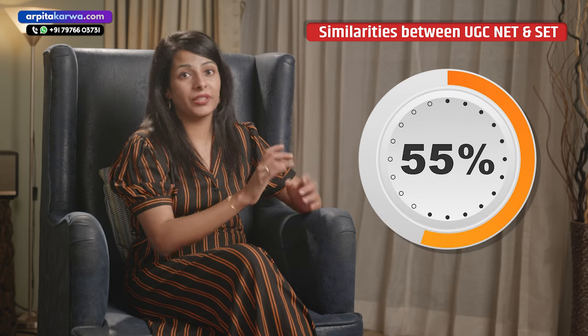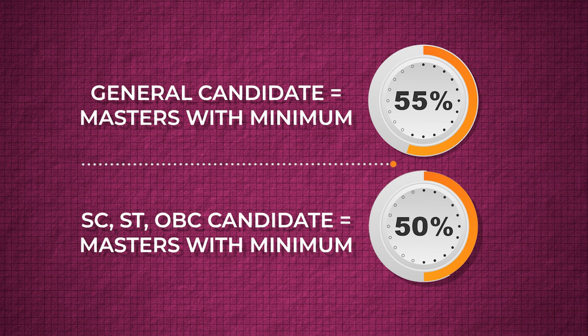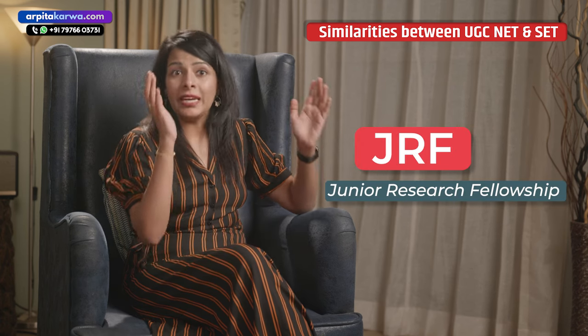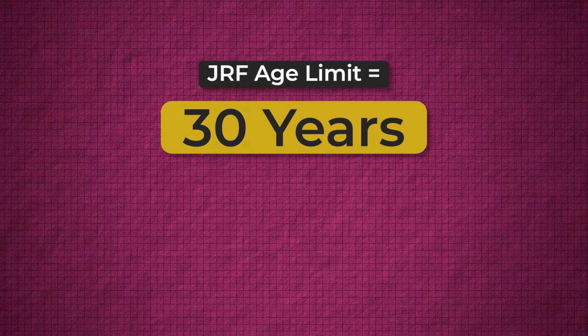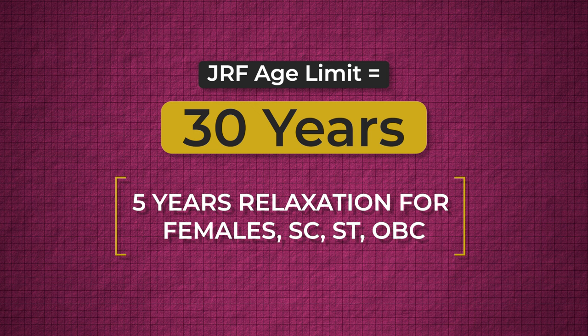The eligibility criteria is also the same for both NET and SET. In both, you need a minimum of 55% marks in your master's without rounding off — this is for general candidates. It is 50% in the case of ST, SC, OBC, and PWD candidates. You can also avail JRF — Junior Research Fellowship — in both exams, given to students based on merit. A student under the age of 30 can avail JRF, with a relaxation of 5 years in special cases such as females, ST, SC, and OBC.